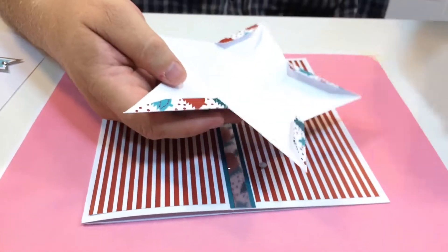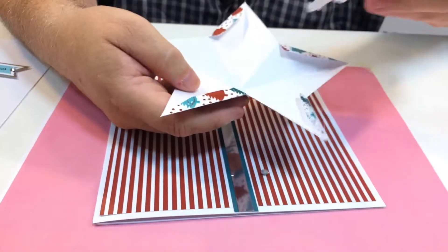And then take your star and you can see you've got the little flaps on the back here. Just apply a little bit of glue to each of those flaps. Just a smear of the glue.